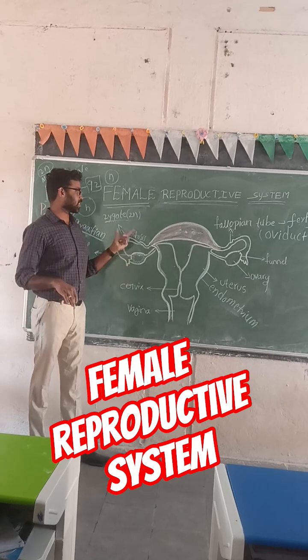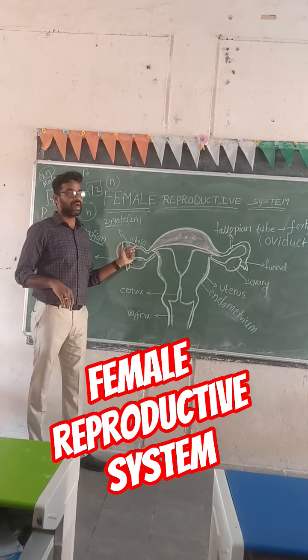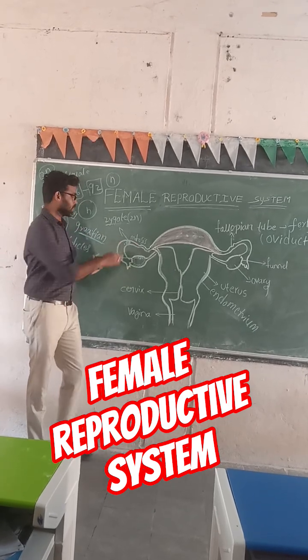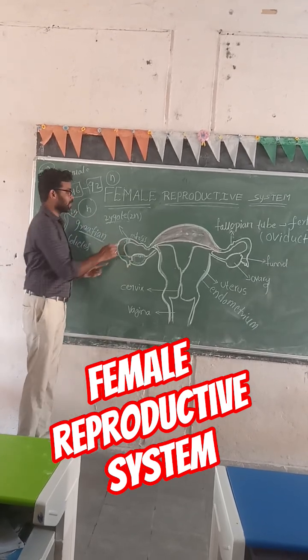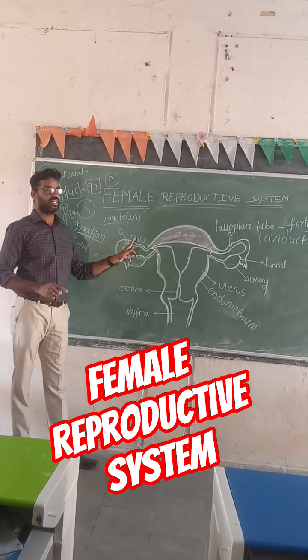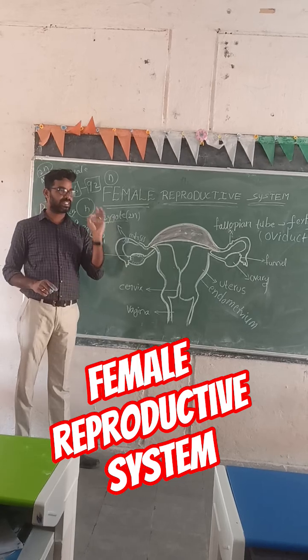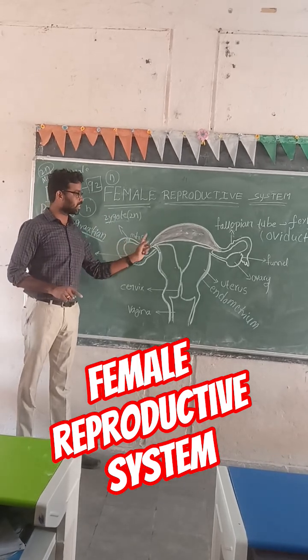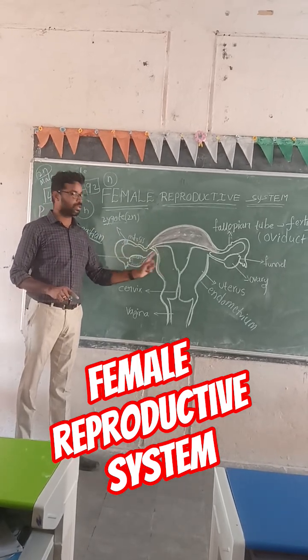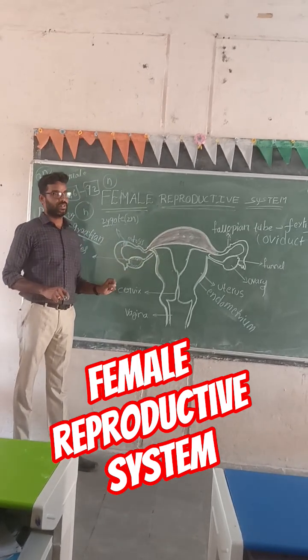All remaining body parts participate in mitosis. The zygote also performs mitotic division, creating a ball-like structure, which then moves towards the uterus.